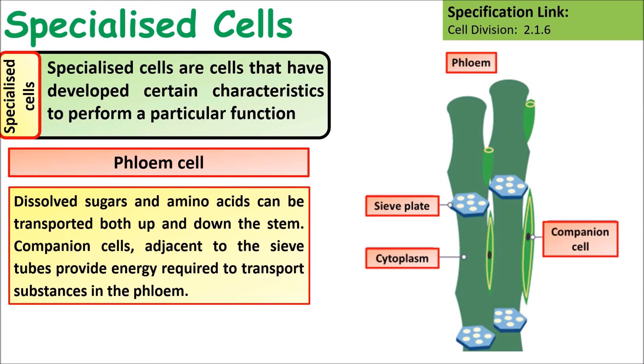Phloem cells carry dissolved sugars through the plant. Dissolved sugars and amino acids can be transported in both directions — up and down the stem. Companion cells adjacent to the sieve tubes provide the energy required to transport substances in the phloem.